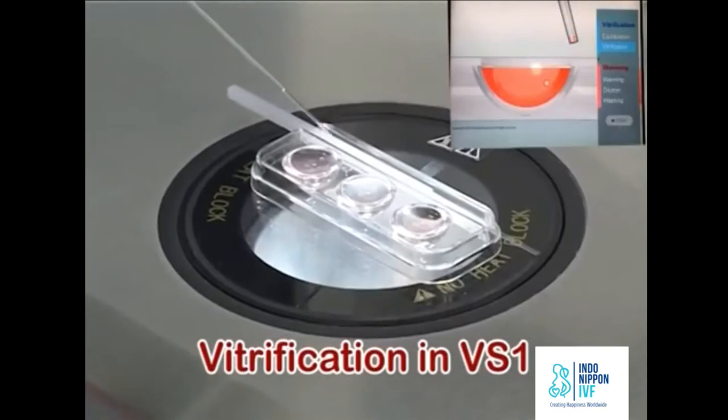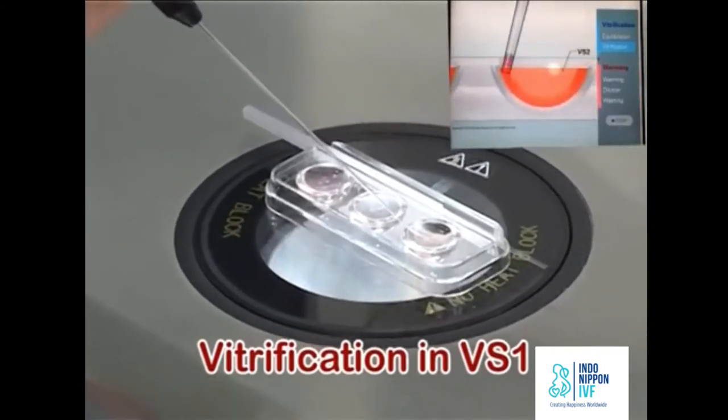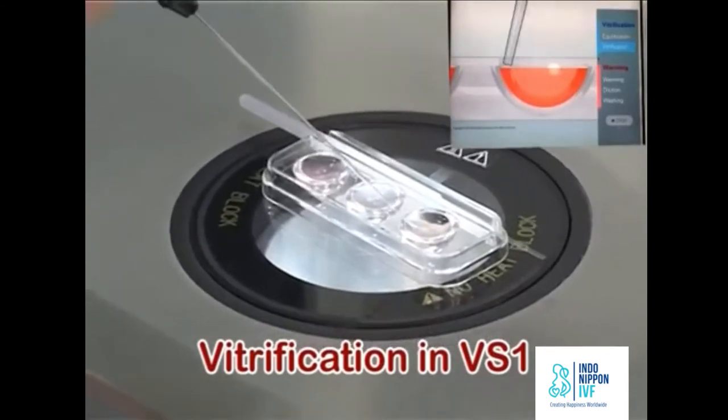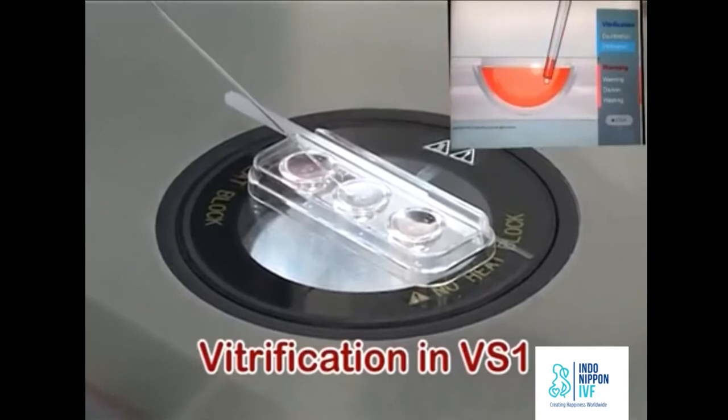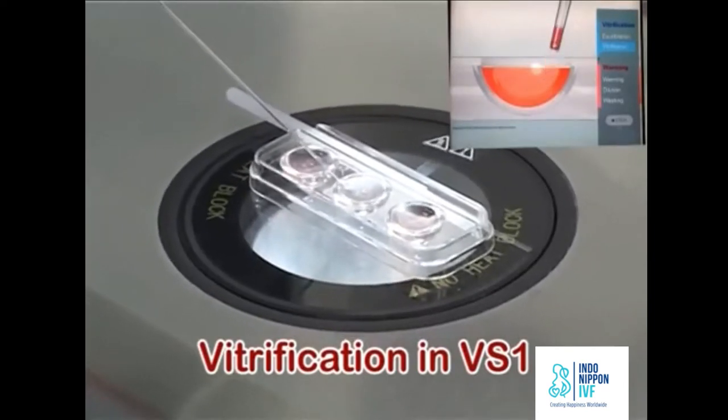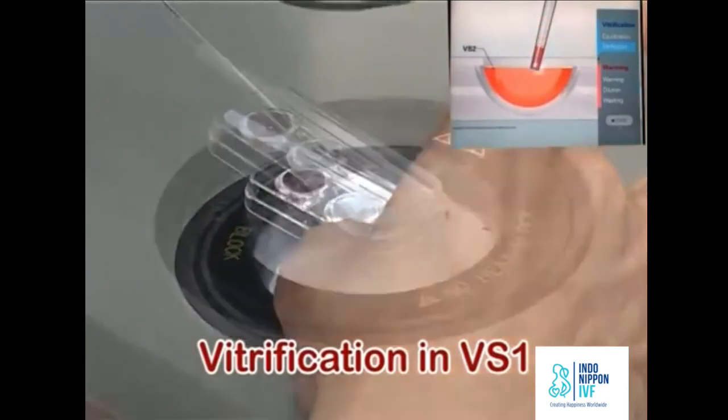Discard the remaining VS-1 and aspirate fresh VS-2. Aspirate oocyte at the tip of the pipette. This entire step in VS-1 should be completed within 30 to 40 seconds.